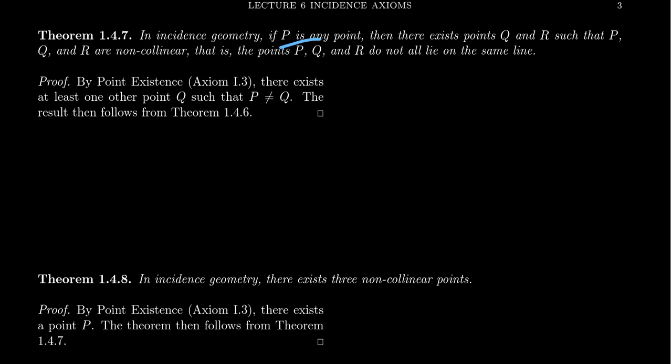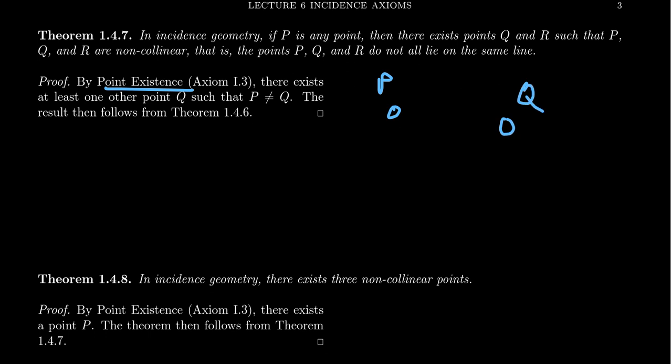Give me one point and I can find two other points so that the three are non-collinear. Starting with our point P, by point existence — which we haven't used yet — there's another point Q that is not P, since point existence guarantees at least three points. Then we can apply the previous theorem: now that we have two distinct points P and Q, there exists a third point R for which P, Q, R form a non-collinear set.